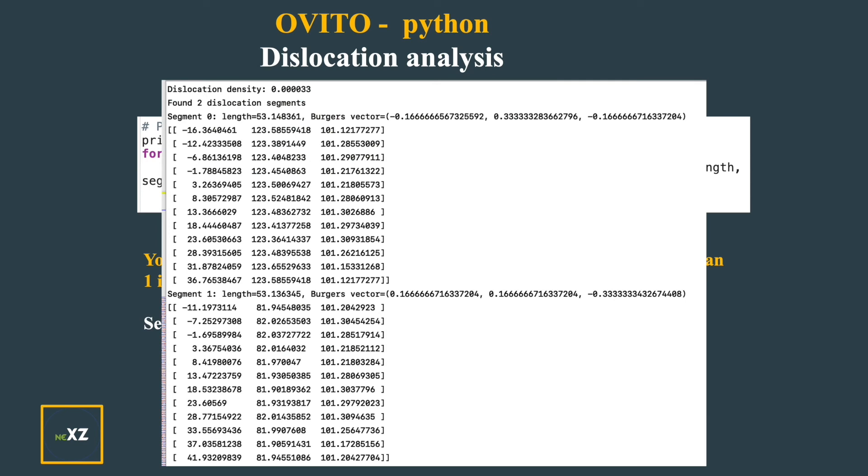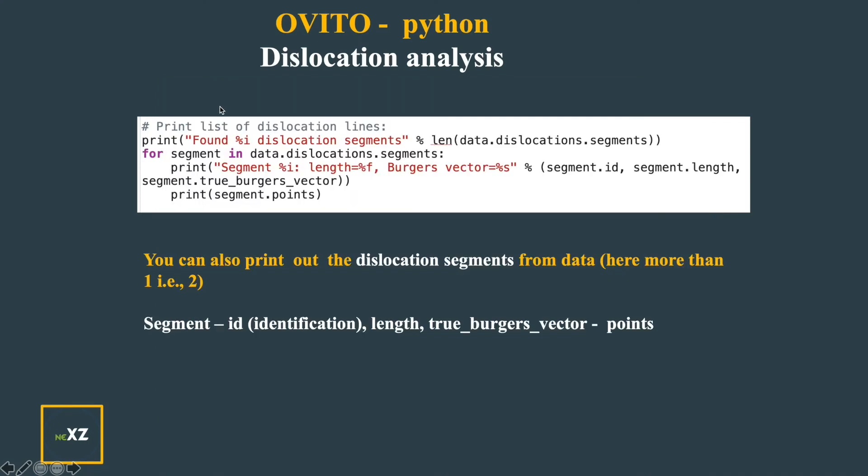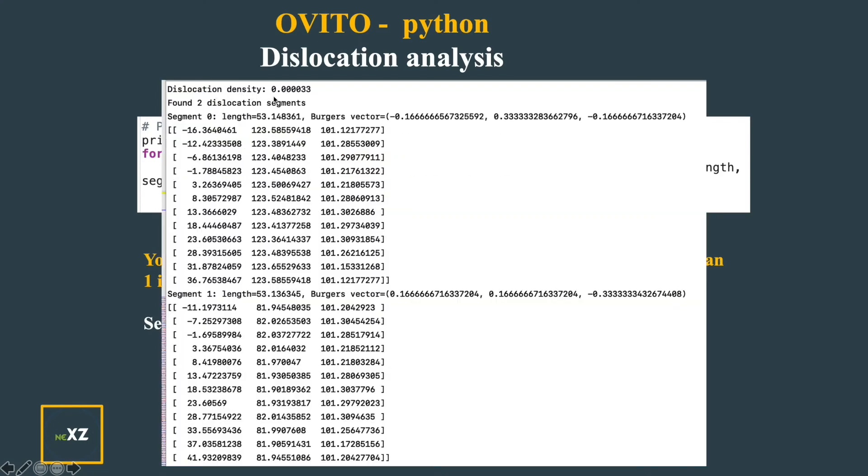After I run it, I see that I have dislocation density. I have found two dislocation segments, segment 0 and segment 1. For segment 0, I have the total length, Burgers vector as well as the individual segment points along the dislocation length. So this is very useful information that you can extract from the dislocation analysis using Python.